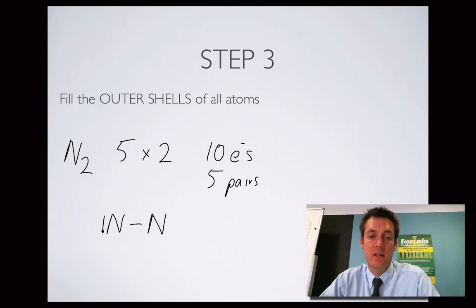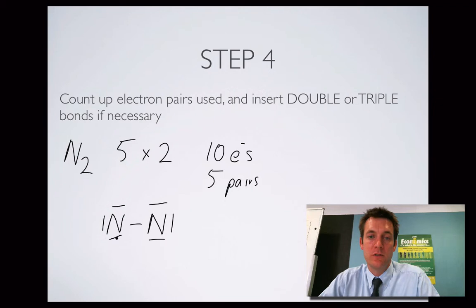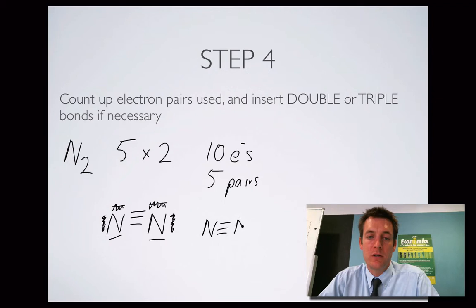Nitrogen atoms can hold four pairs — eight electrons — in their outer shell. So there are four pairs around each atom. Now count up the electron pairs used and insert double or triple bonds if necessary. I had five pairs to play with but I've used seven, so let's put a double bond in. I can take an electron pair off each nitrogen atom because they both still have a full shell. I've still used six, so I put in another bond and remove another pair from each atom. Now I've used five pairs. The result is a triple bond with one lone pair on each nitrogen atom.